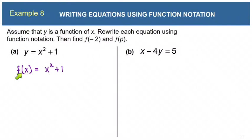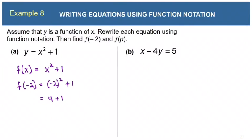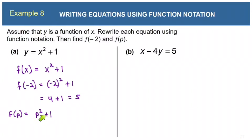To evaluate at negative 2, we plug negative 2 in place of x. Negative 2 squared is positive 4, and 4 plus 1 is 5. So f of negative 2 is 5. And if we plug p in place of x, f of p equals p squared plus 1, and there's nothing more we can do to simplify it.